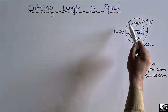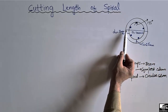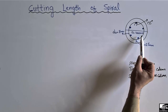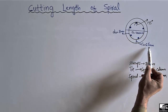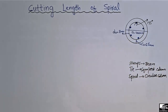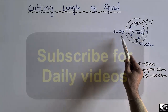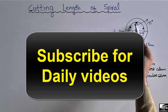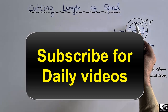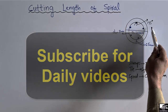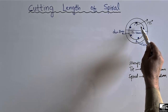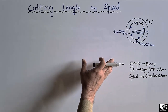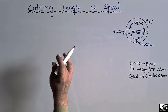The whole diameter of the column including the concrete cover is 1000 mm. The concrete cover is 25 mm on each side. The diameter of the bar used in the spiral is 8 mm, and the hook used in this spiral is a 135-degree bend.